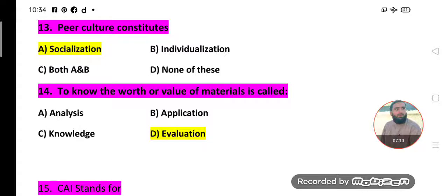MCQs number 13. Peer culture constitutes: Socialization. Peer means students of same age, or same class level - you seat these students in groups for teaching classes. Peer culture constitutes socialization. Individualization is not correct, both A and B is incorrect. Socialization is the correct option. Peer culture constitutes socialization.